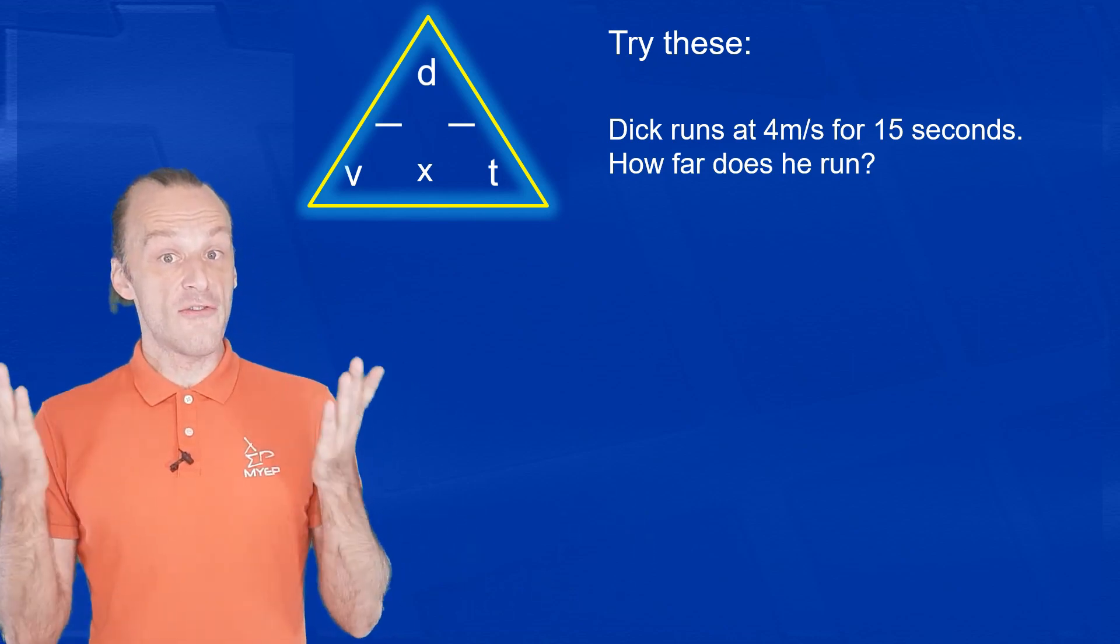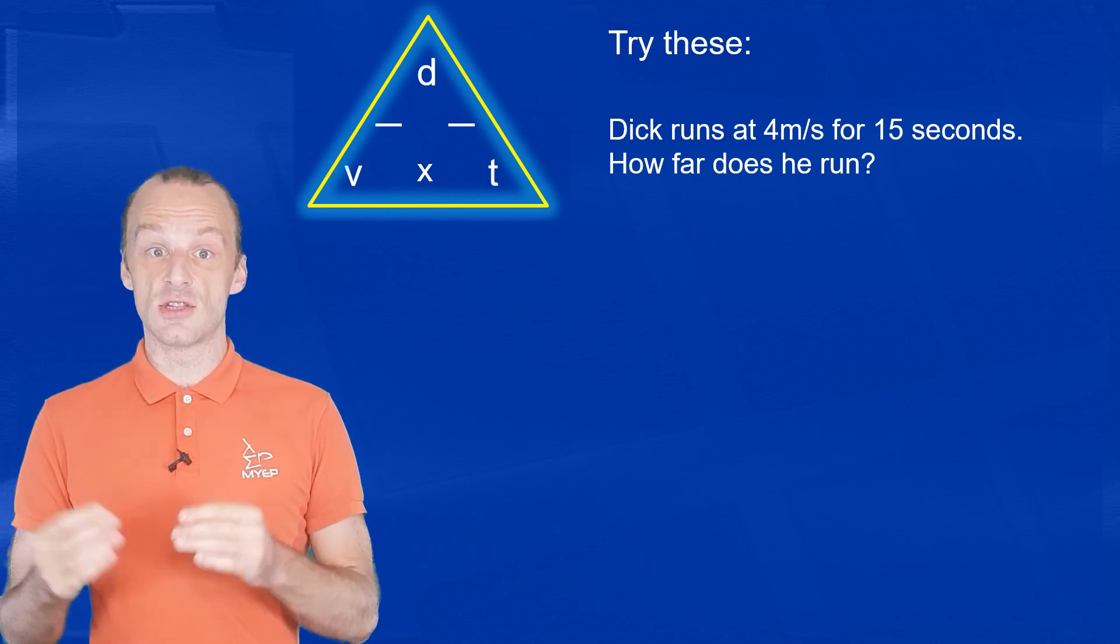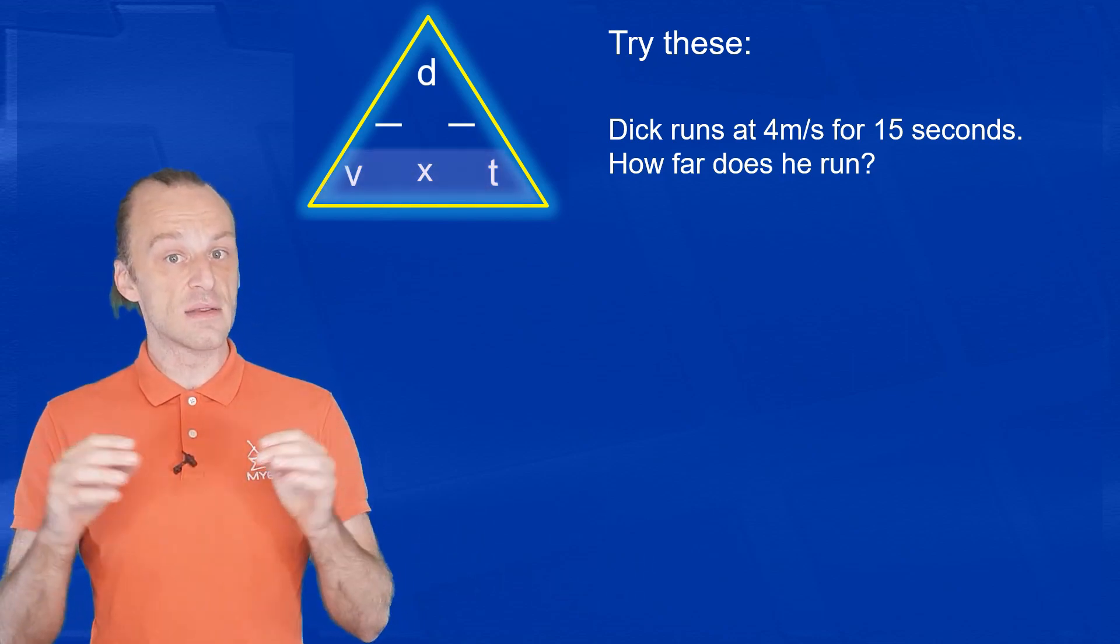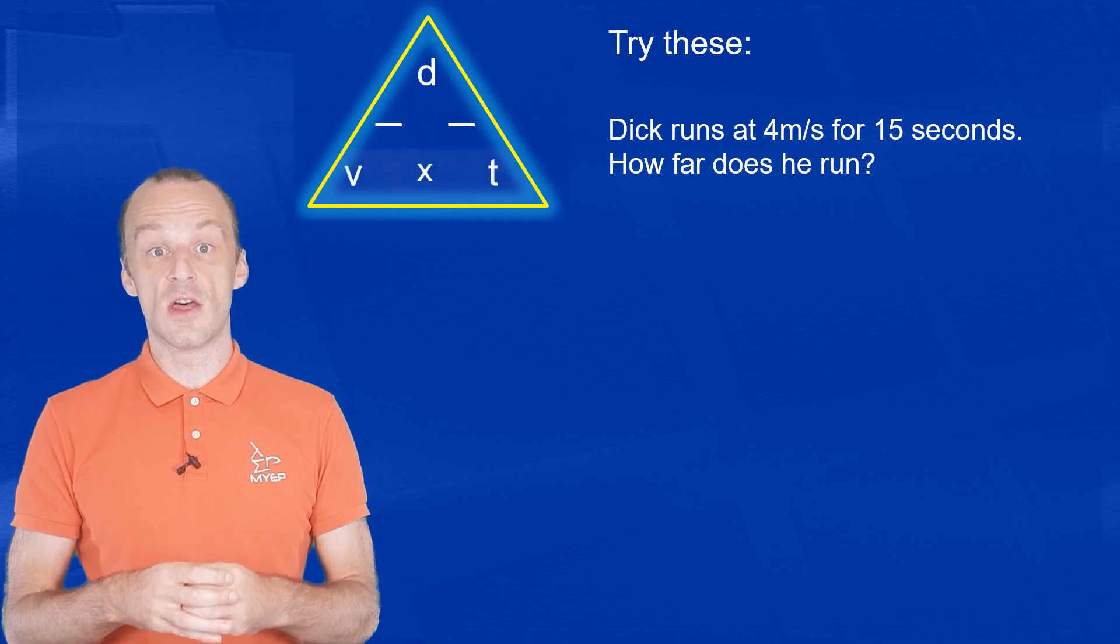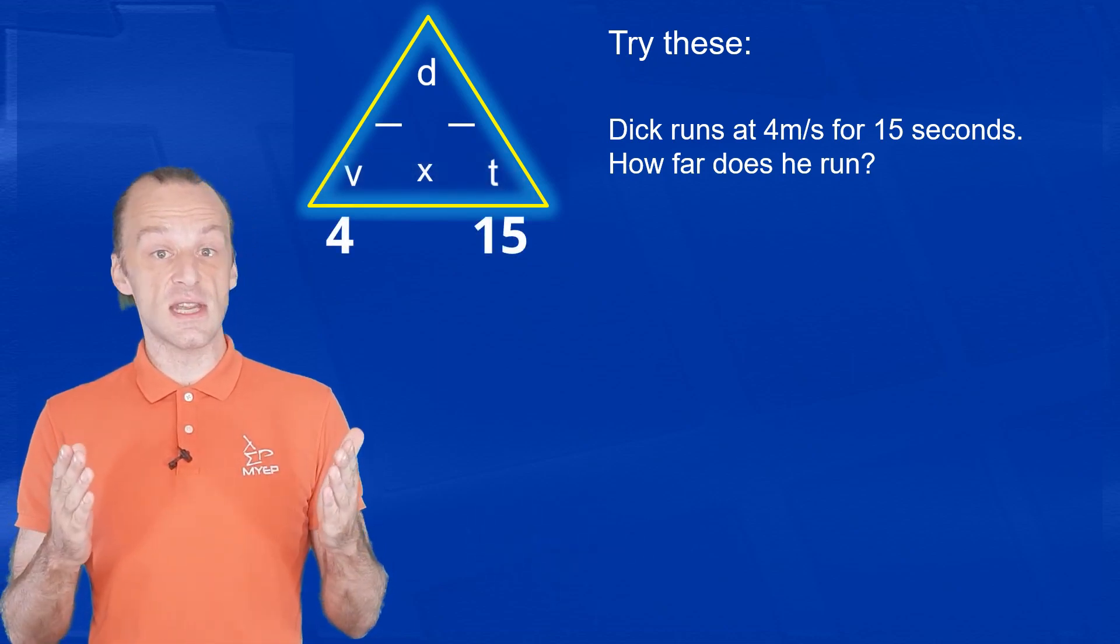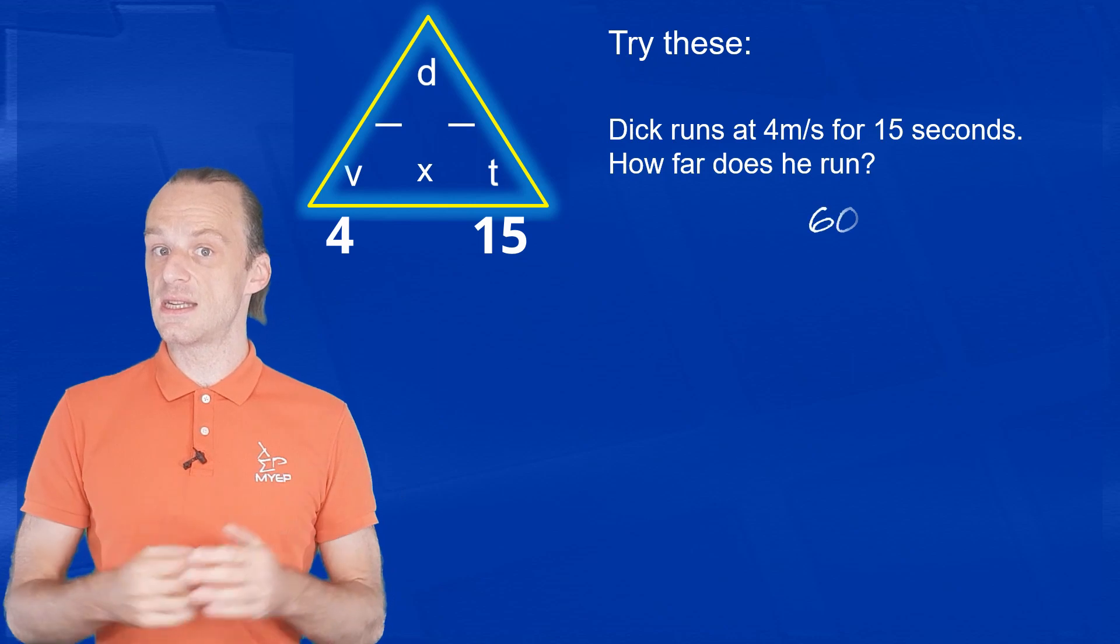So how far means we want to calculate distance at the top, and that means we multiply the other two numbers. 4 times 15 is 60, so Dick runs 60 meters.